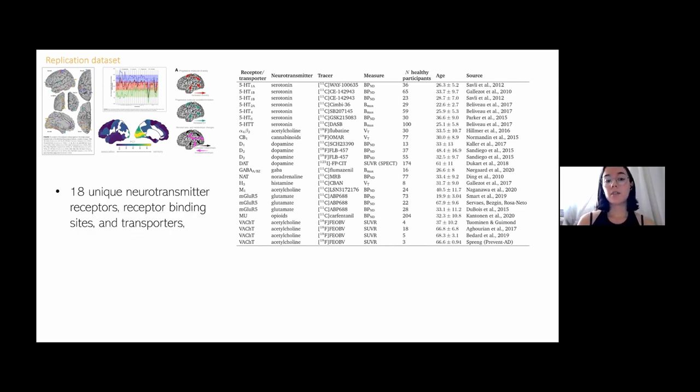We have a total of 18 unique neurotransmitter receptors, receptor binding sites, and transporters across nine different neurotransmitter systems. So you can see those right here: serotonin, acetylcholine, dopamine, et cetera. And for more than 1,200 healthy controls. So it's a pretty big dataset.